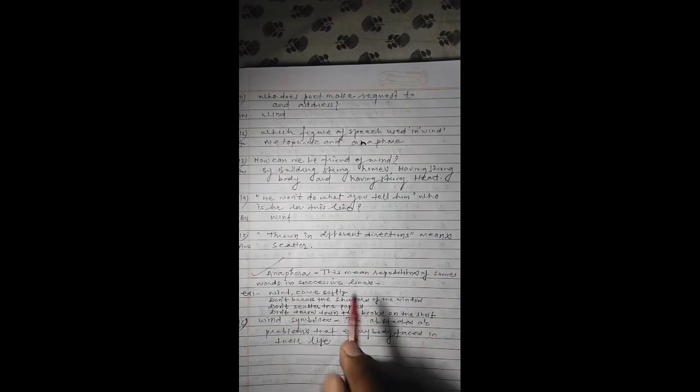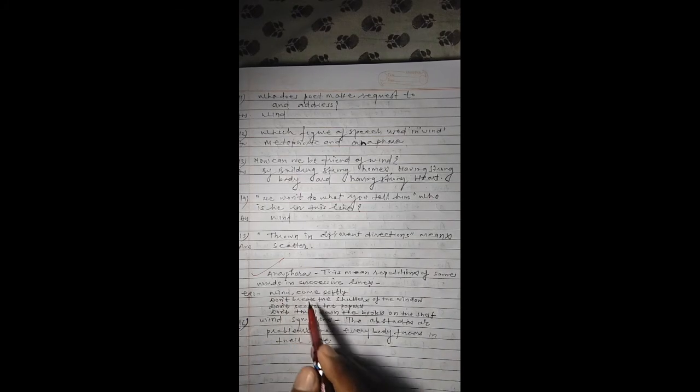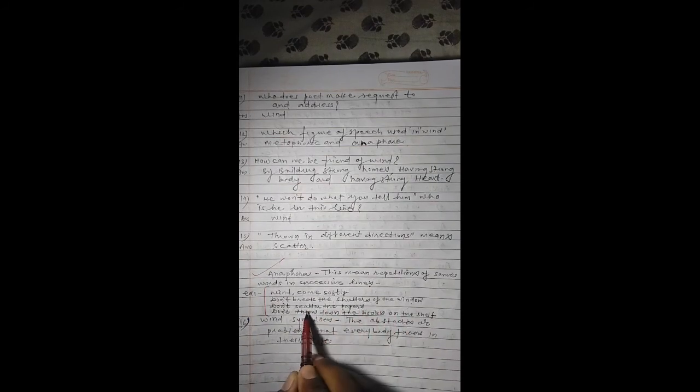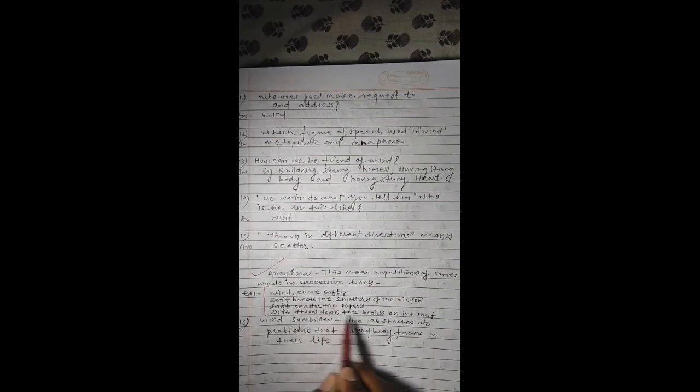The poetic device in this poem 'Wind' is anaphora. It means repetition of the same words in successive lines. In any stanza, if the lines one after another have the same word repeated, that is anaphora. Like in the first stanza of this poem: 'Wind, come softly. Don't break the shutters of the windows. Don't scatter the papers. Don't throw down the books on the shelf.' If you notice carefully, 'don't' is in the third line, 'don't' is also there, and here also 'don't' is there. So the figurative device here is anaphora.